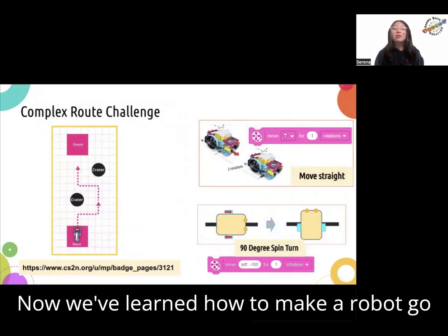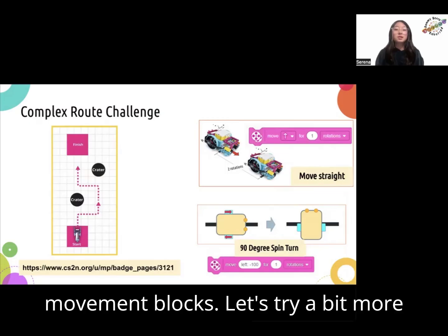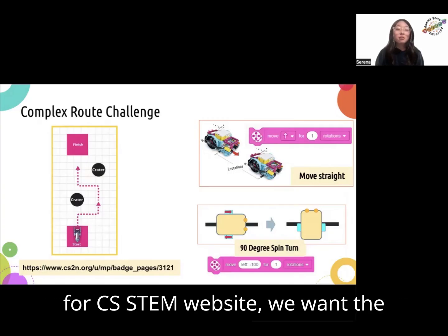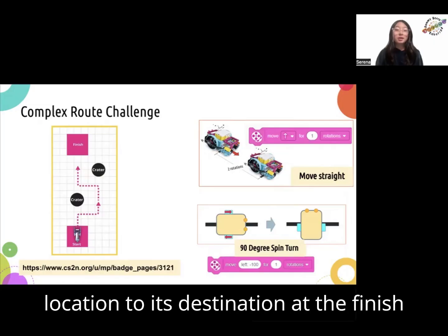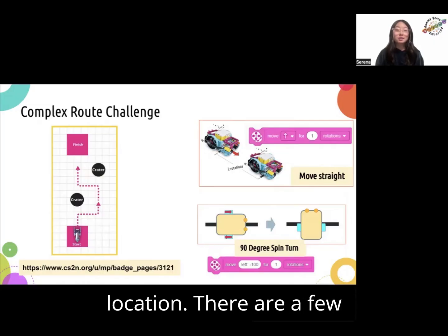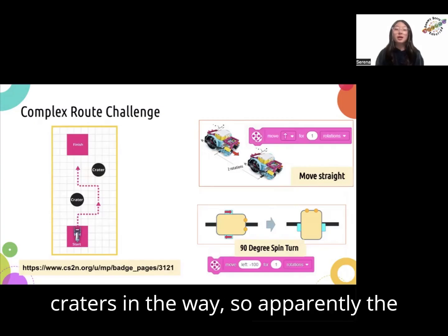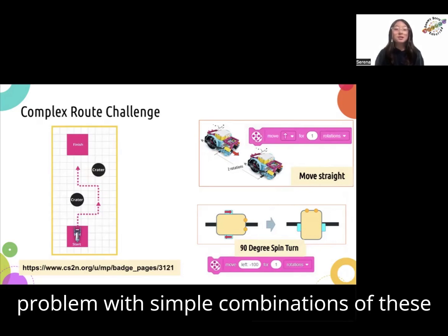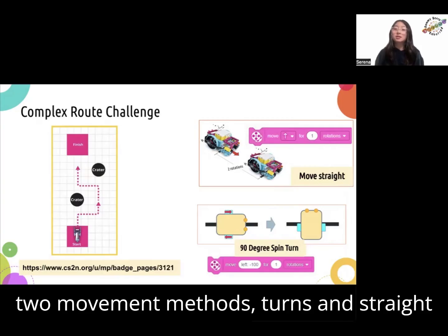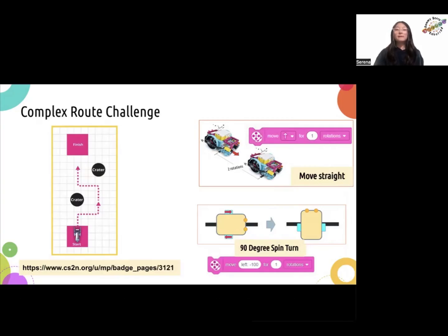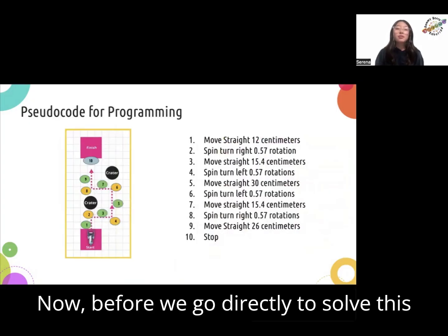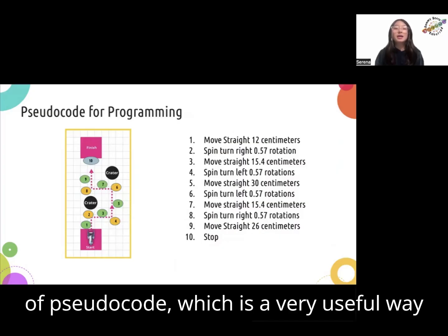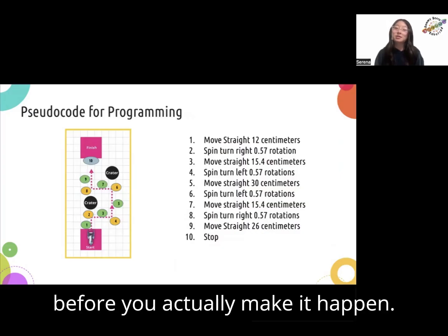Now that we've learned how to make a robot go straight or take simple turns with movement blocks, here's a more complex challenge. In this example from the CS STEM website, we want the robot to navigate from its starting home location to the finish location. There are a few craters in the way, so the robot cannot simply go straight. Can you solve the problem using simple combinations of turns and straight movements? Before we solve this, I want to introduce the concept of pseudocode, a very useful way to plan out what you want the robot to do before you actually make it happen.